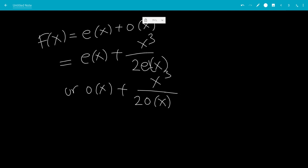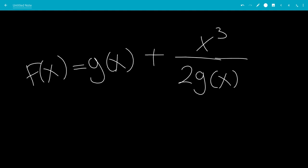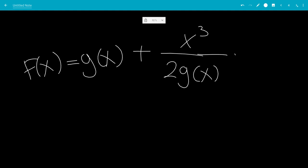However, we can generalize this more, saying that f(x) = g(x) + x³/(2g(x)), where we have conditions that g(x) ≠ 0, and also that g(x) is even function or odd function.